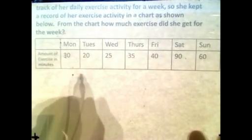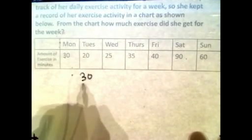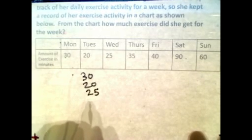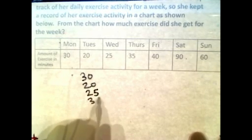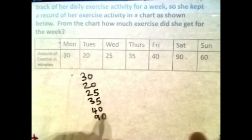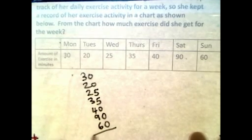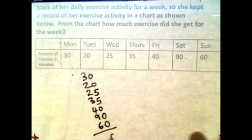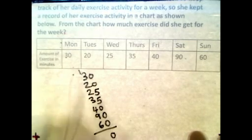Let's do that. We have 30, 20, 25, 35, 35, 40, 90, and 60. What we're going to do is we can add: 5 plus 5 is 10, carry the 1 over to the tens column.